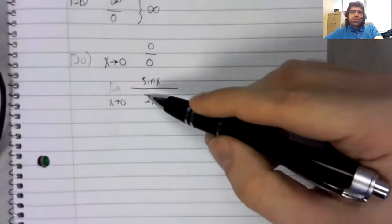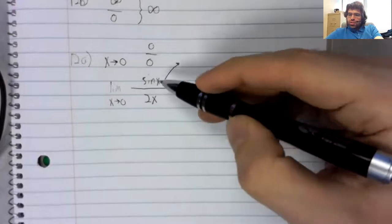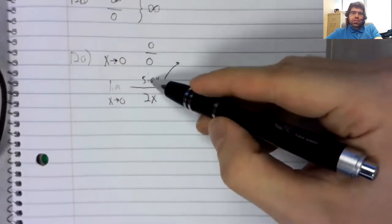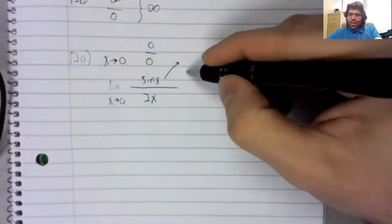This is still indeterminate. The sine is continuous. You can take the limit of the sine just by plugging zero in there.